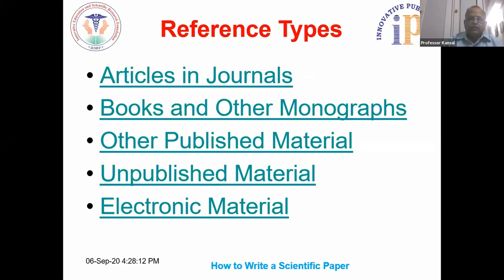Works are to be referenced in different ways: for articles in journals there is a different method; for books or other monographs, the method is different; for other published material there are different guidelines; for unpublished material there are different guidelines; and for electronic material searched from the web, the guidelines are separate.